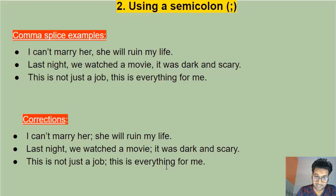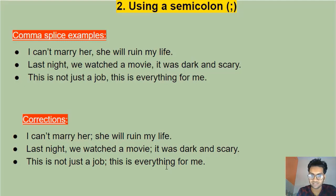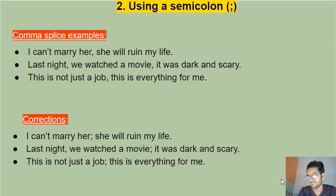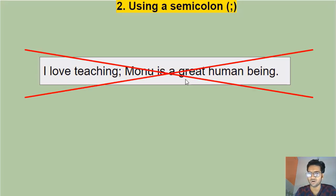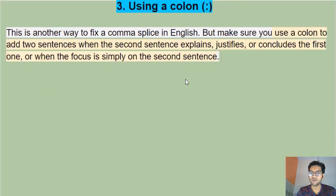Using a semicolon is a more advanced way to fix a comma splice. Only use it when the sentences are closely related and talking about the same thing. If they are not related, don't use the semicolon — use a period instead. For example: 'I love teaching. Mono is a great human being.' These sentences are not related, so a semicolon would be wrong there.